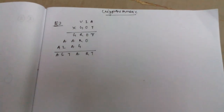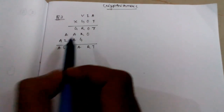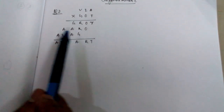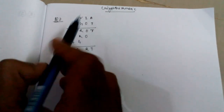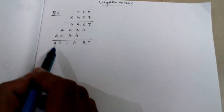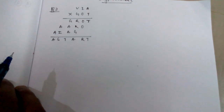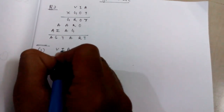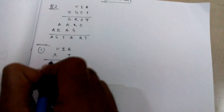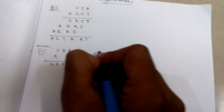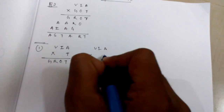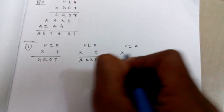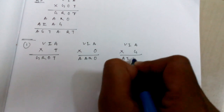Hello friends, today we are going to solve a cryptarithmetic problem. The question is VIA into GOT, which gives GROTA plus AROA plus AIAG, and the final sum is ASTART.